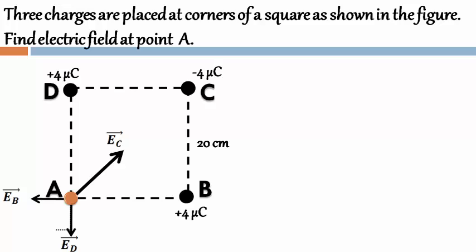E_B and E_D are acting perpendicular to each other therefore we need to find the resultant first equals to E_R and then we subtract that with E_C to find the final value of electric field at point A.